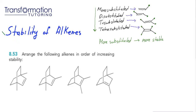Let's look at our examples to identify what kind of substitution each double bond has, which will allow us to arrange the alkenes in order of increasing stability. For the first one on the left, we see a double bond and ask ourselves how many carbons it is directly attached to. We identify where our double bond is and see that it is directly attached to two carbons.